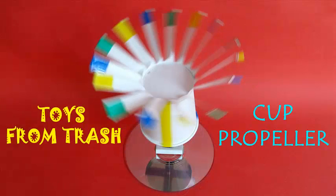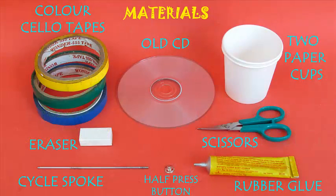And what we need to make this cup propeller is a couple of paper cups, a CD, a cycle spoke, some glue, and a half-pressed button.